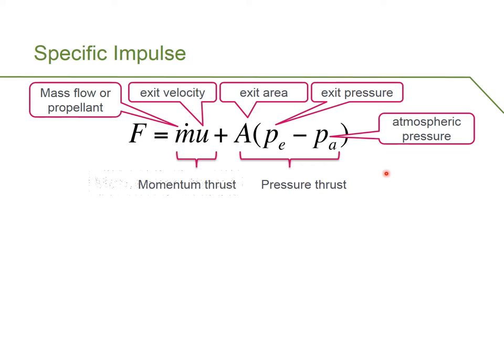However, in most practical rockets, the momentum thrust is much larger than the pressure thrust. And we'll see this in the examples later on, but the pressure thrust might only be about a tenth of the momentum thrust, let's say.